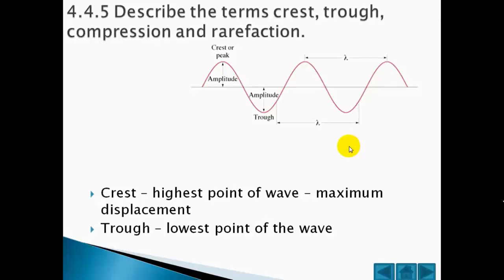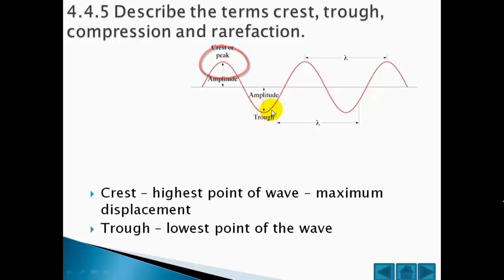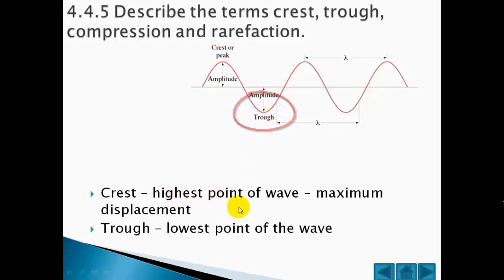Describe the terms crest, trough, compression and rarefaction. The crest is the maximum value which is above the equilibrium line. The trough is the minimum value which is below the equilibrium line. The distance between the equilibrium line and the crest is the amplitude.